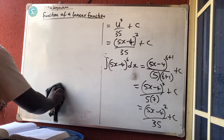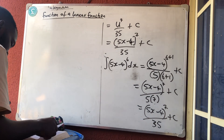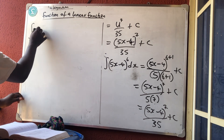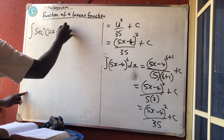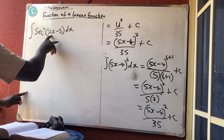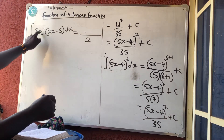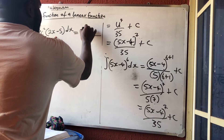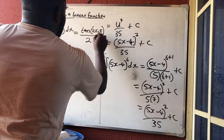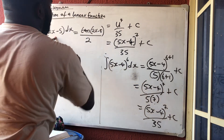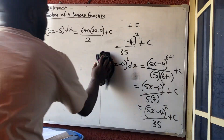It must always be a linear — if it's not linear we look for other methods. Next: the integration of sec²(2x − 5) dx. It is a linear. Differentiate the bracket: we get 2, which we keep at the denominator. The integral of sec²(something) is tan(something), because the derivative of tan is sec². So the answer is tan(2x − 5) divided by 2, plus a constant.